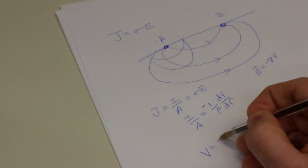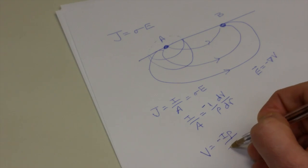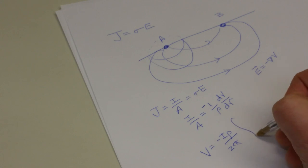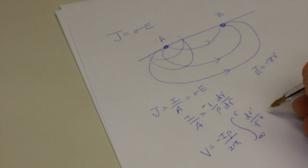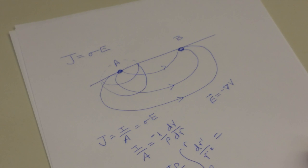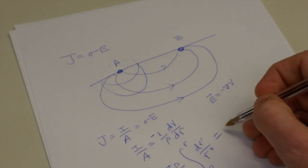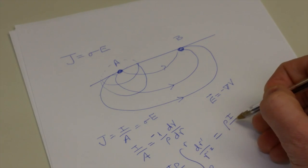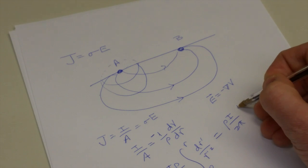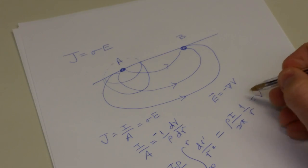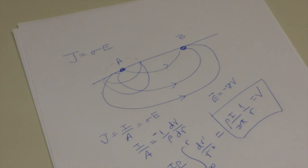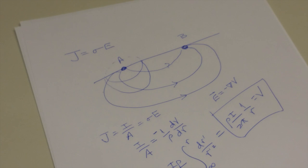We have V equals negative I rho over 2 pi, the integral from infinity to r of dr prime over r prime squared. And that becomes V equals rho I over 2 pi, 1 over r. This now is our expression of Ohm's Law for this experimental situation.